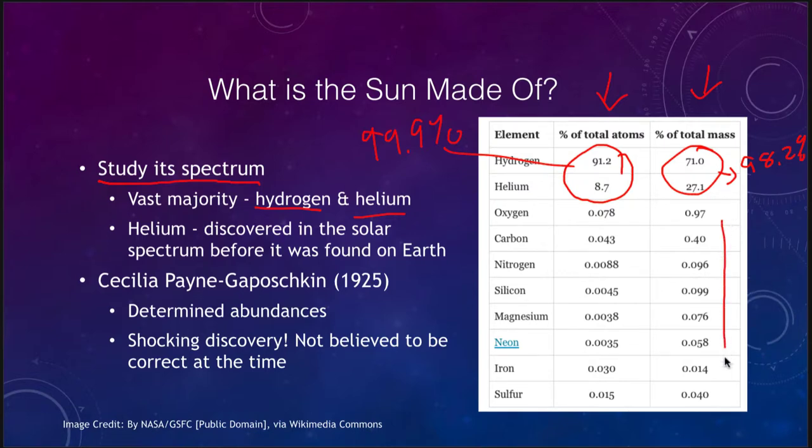We also know that one element was actually discovered in the Sun before it was seen here on Earth. When we started taking the spectrum of the Sun we found that there were elemental lines that could not be identified and that element was then named helium after helios for the Sun. So it was found in the solar spectrum before we found it here on Earth.